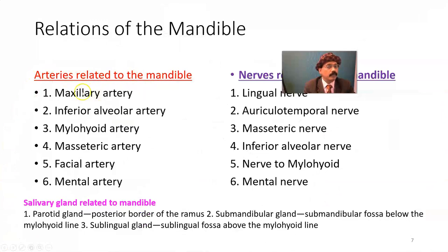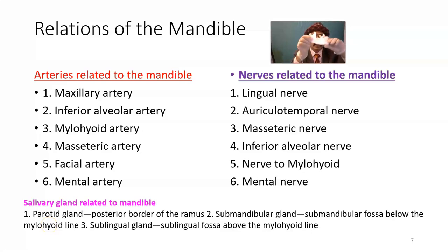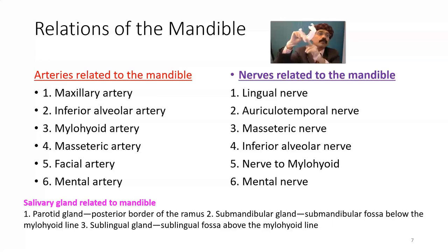Arteries related to the mandible include the maxillary artery, inferior alveolar artery, mylohyoid artery, masseteric artery, facial artery, and mental artery. Nerves related to the mandible include the lingual nerve, auriculotemporal nerve, masseteric nerve, inferior alveolar nerve, nerve to the mylohyoid, and mental nerve. All three salivary glands are related to the mandible. The parotid gland is on the posterior border of the ramus, both inside and outside. The submandibular gland lies below the mylohyoid line in the submandibular fossa. The sublingual gland lies above the mylohyoid line in the sublingual fossa.